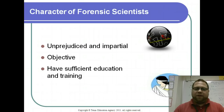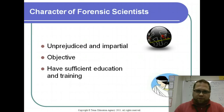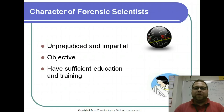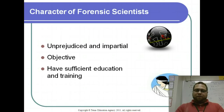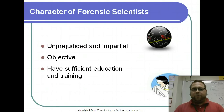The character of a forensic scientist: you need to be unprejudiced and impartial. This is difficult for us as human beings — we all have certain prejudices and partialities — but you must do your best to completely cut that out of your job. You need to be completely objective and able to look at the cold, hard facts, and you also need to be educated and well trained.